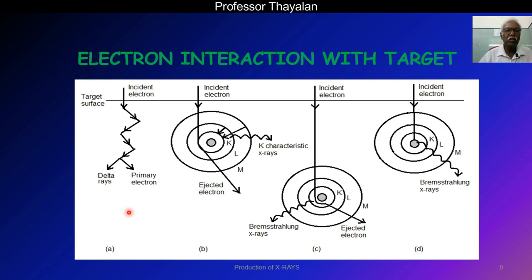This slide shows the various electron interaction steps with the target. There are four steps involved. First, electron interaction with the outer shell causes ionization. Second, electron interaction with the inner shell electrons. Third, electron interaction with the nuclear field. Fourth, direct electron interaction with the nucleus. In the first step, when the electron interacts with the outer shell, it produces a lot of heat and delta rays.